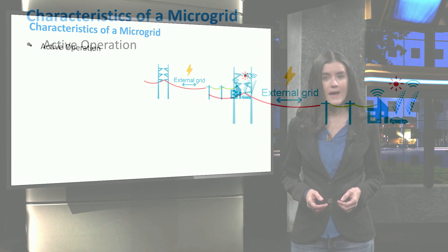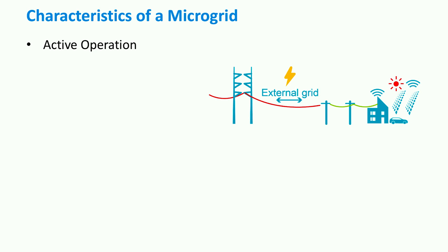Third, microgrids enable an active operation of distribution network. Management and coordination of this architecture makes the integration of microgrid sources possible.